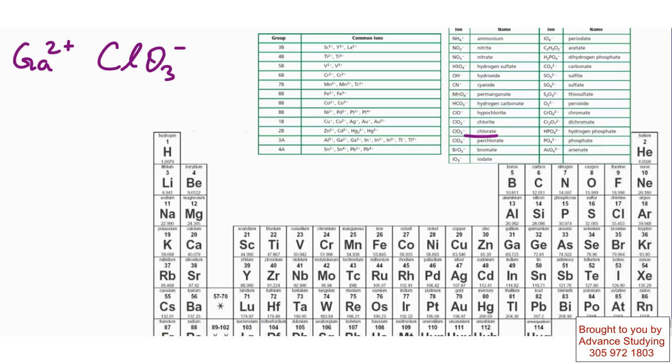When we name this compound, we don't change the ending of the polyatomic ion. If I have to name it chlorate, then I name it chlorate. I don't change it to chloride like I did with a single element. So gallium and chlorate will simply be gallium chlorate.